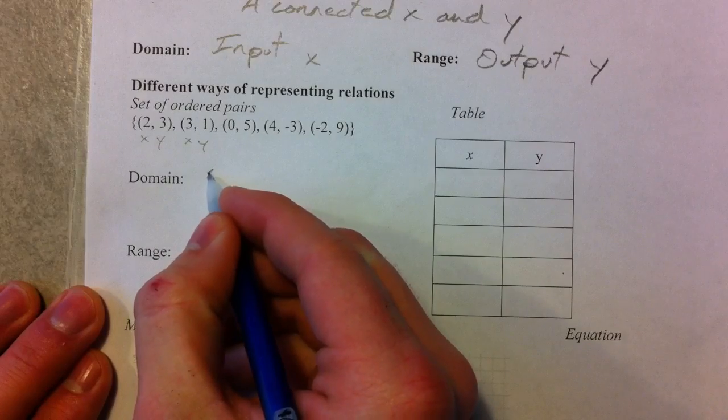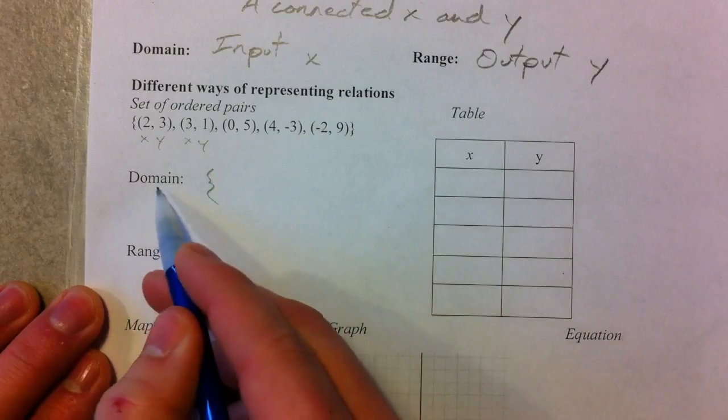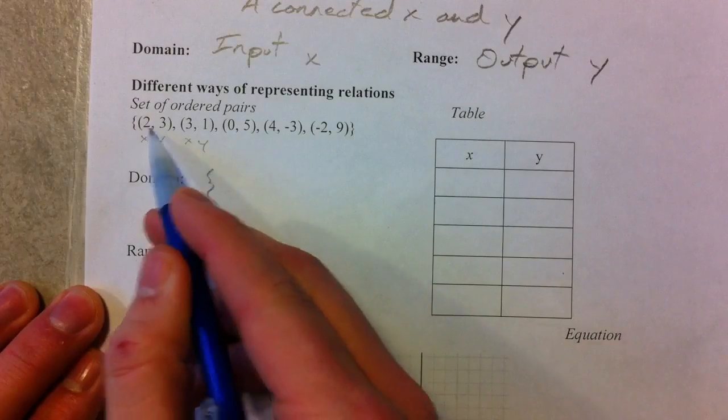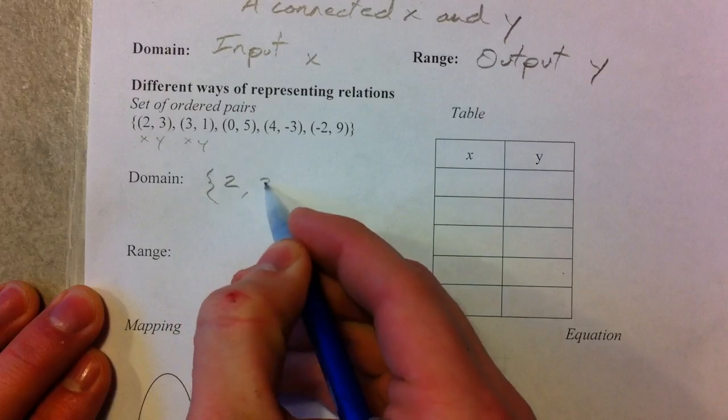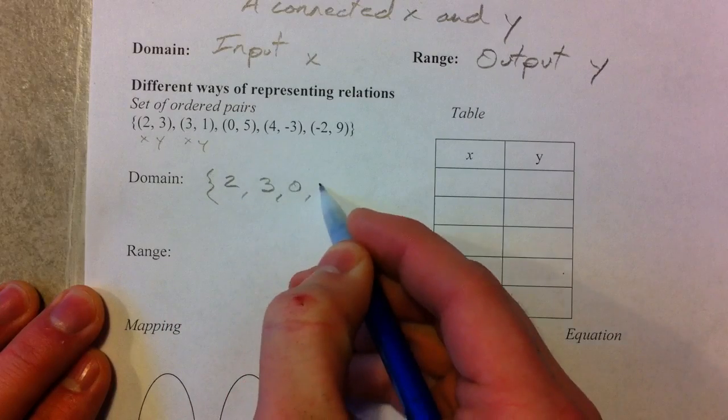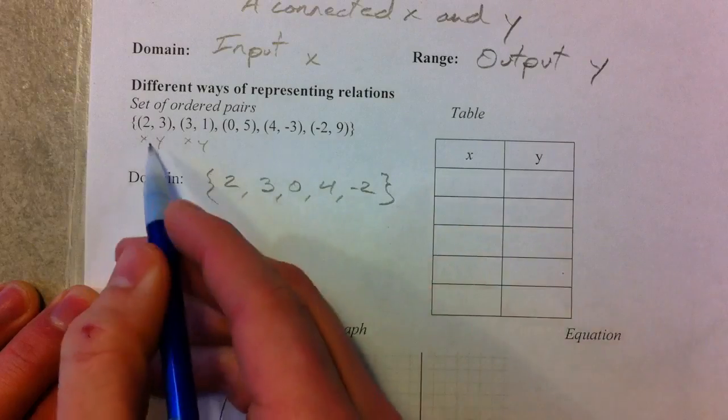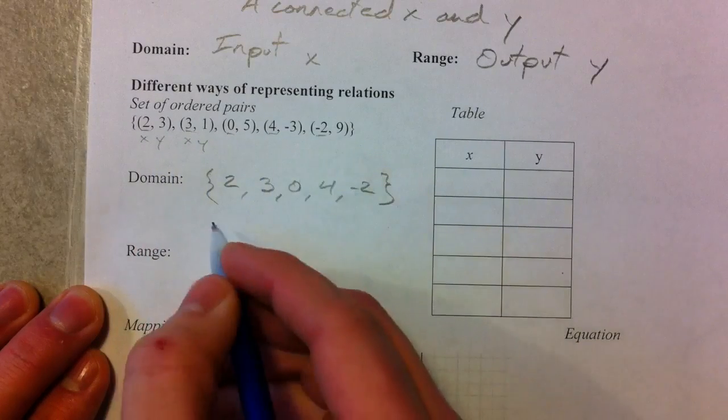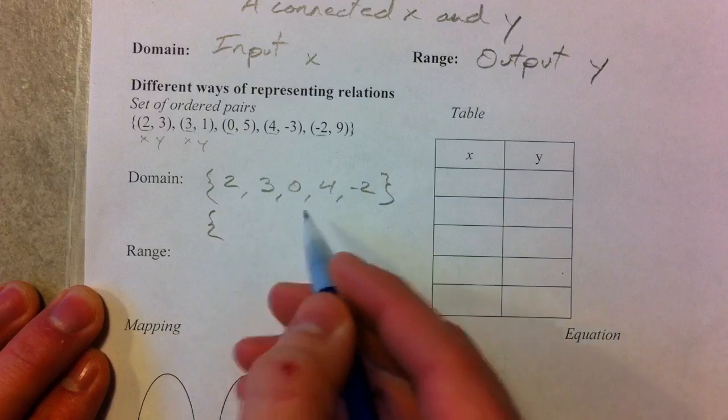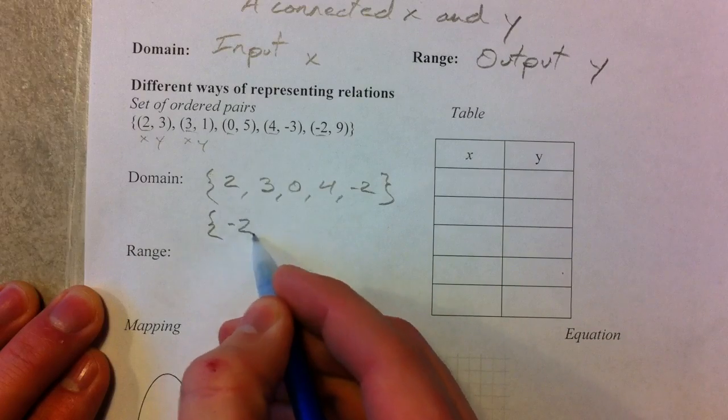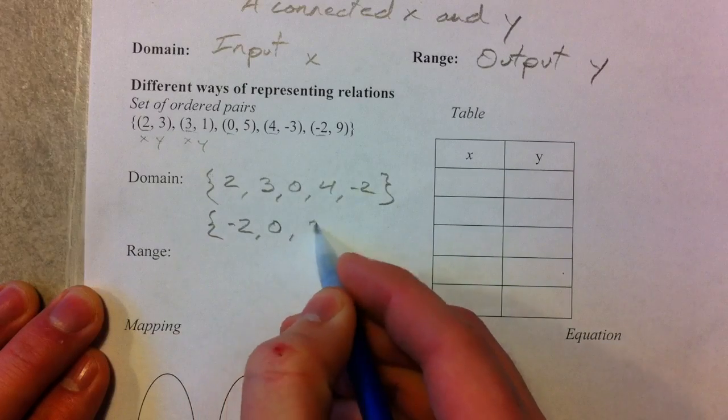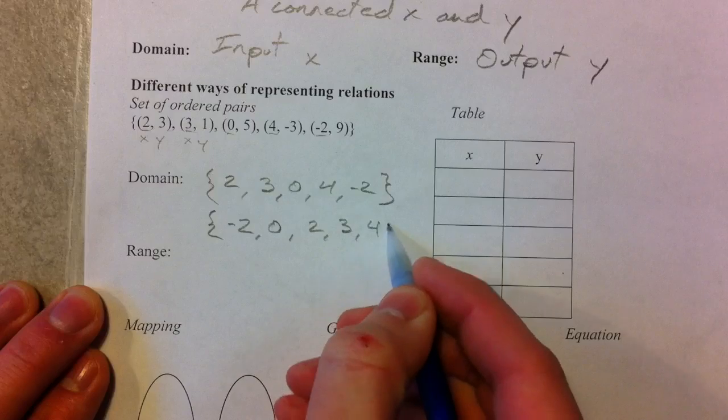And so the domain of this is just all of the input values, all of the X's. So we have 2, 3, 0, 4, and negative 2. And that's just all of those X's. Now typically it's kind of nice to redo those in numerical order. Negative 2, 0, 2, 3, 4.